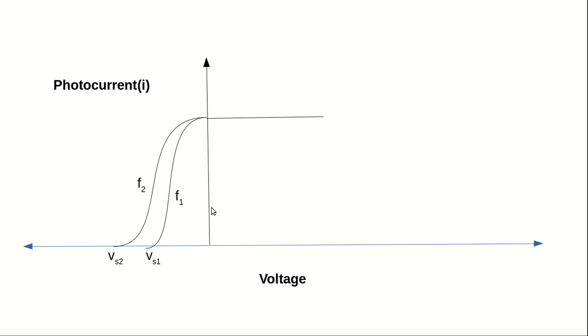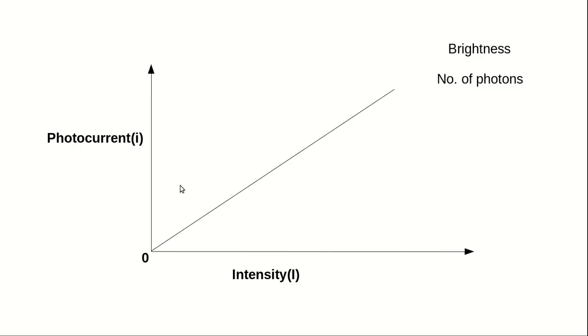Again he studied the photo current versus voltage for two different frequencies. Now he got two different stopping potentials but he got the same photo current for the forward bias. So this means as I am changing the frequency, I am changing the energy. So in this way Einstein could relate this equations also.